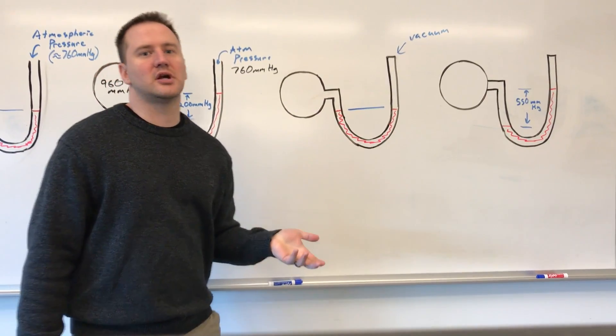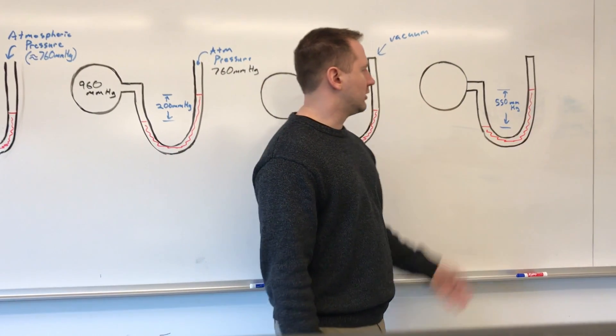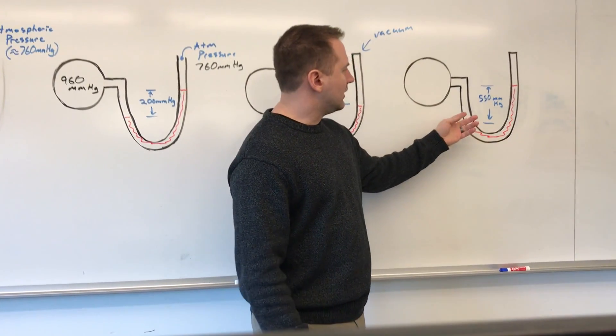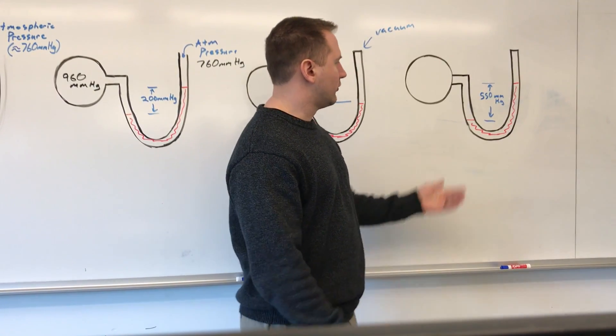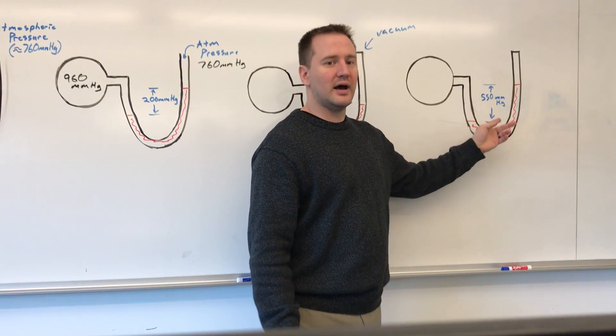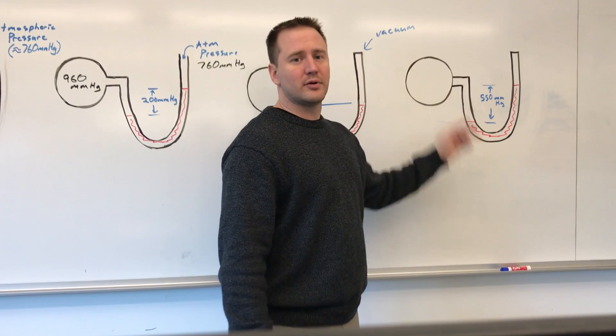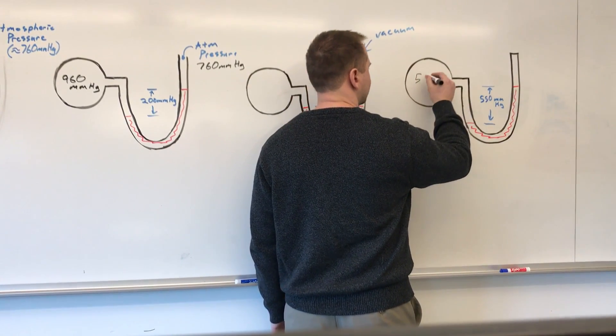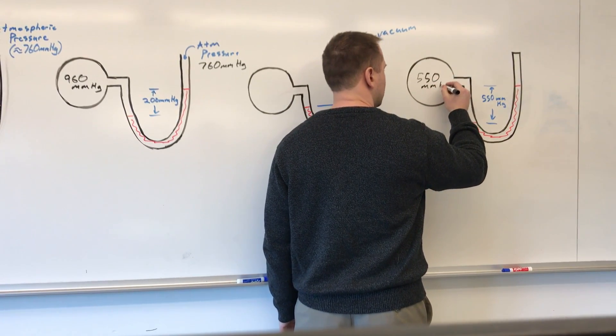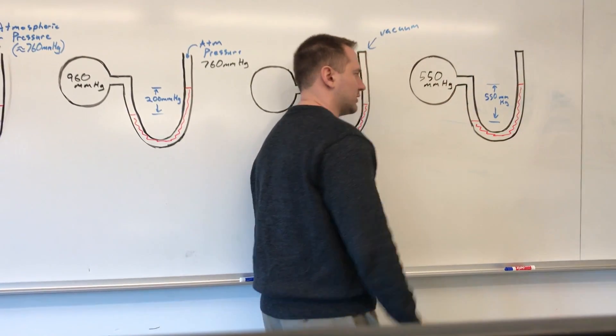However, if you have some reaction that generates a gas inside of here and it pushes the mercury 550 millimeters up, you can say that based on the difference in height, that's the pressure that's in here. So we could say that this container right here now has 550 millimeters of mercury worth of pressure.